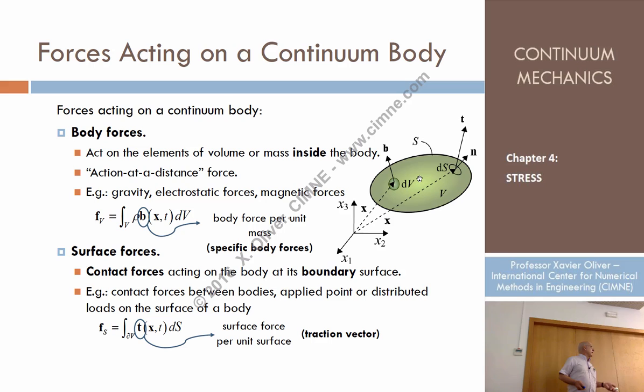Well, by a vector again. A vector that is the force per unit of surface. So, we consider that there is a vector at every point of the exterior of the body, with normal n, there is a vector t, which is the force per unit of surface.